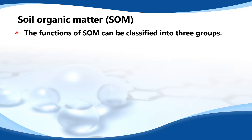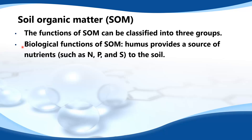The functions of soil organic matter can be classified into three groups. The first are the biological functions of soil organic matter. Humus provides a source of nutrients such as nitrogen, phosphorus and sulfur to the soil.